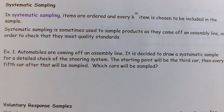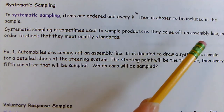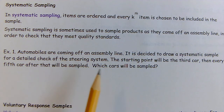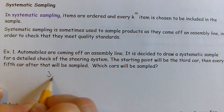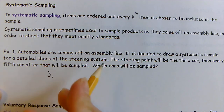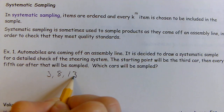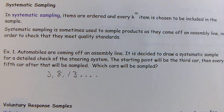Systematic sampling is where items are ordered and every Kth item is chosen to be included in the sample. You have a predetermined system identifying which ones will be included. For example, automobiles coming off an assembly line: a systematic sample is drawn for a detail check of the steering system. The starting point is the third car, and then every fifth car after that will be sampled — so car 3, then add 5, add 5, and so on. There's a system in place before the sampling begins.